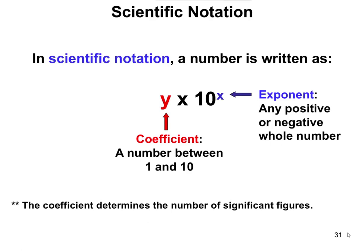Scientific notation is a way to write really big or really small numbers, kind of using a shorthand system. In scientific notation, the general format that we're going to look at is y times 10 to the x.